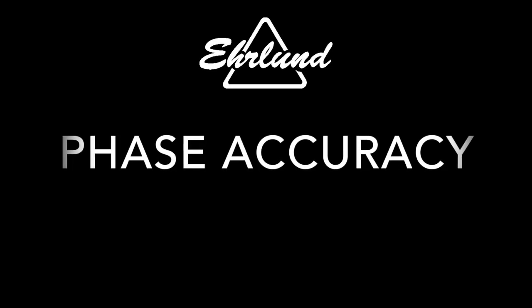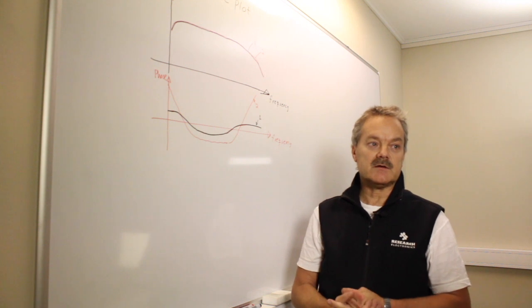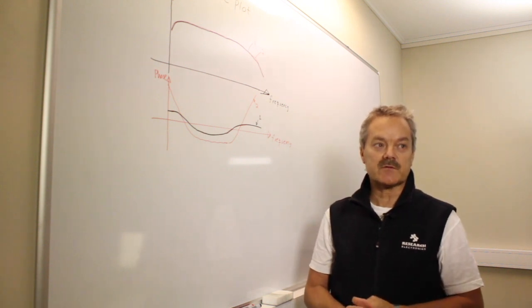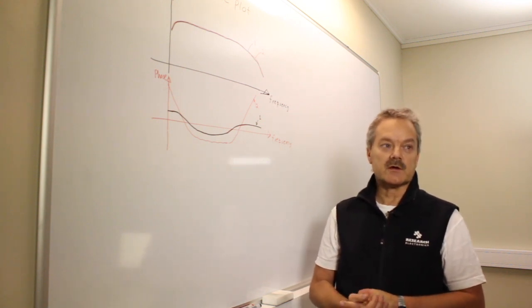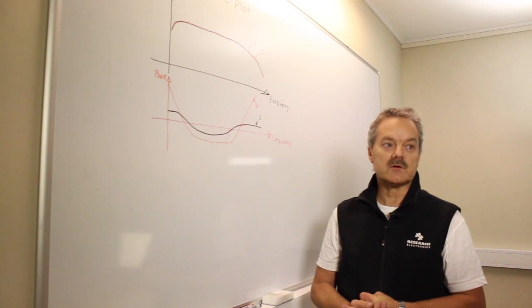Phase accuracy. A microphone system produces something called dispersion, which means that different frequencies coming into the system go through the system at different speeds. As they exit the system and are added together, they might not look like the same signal that went into the system.